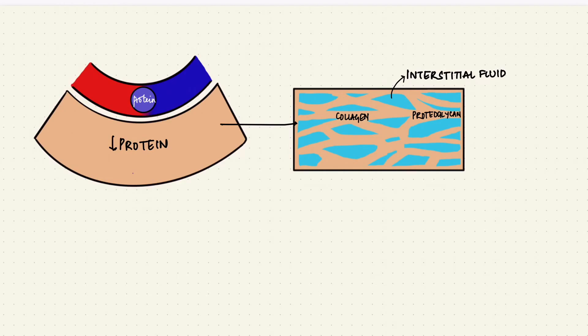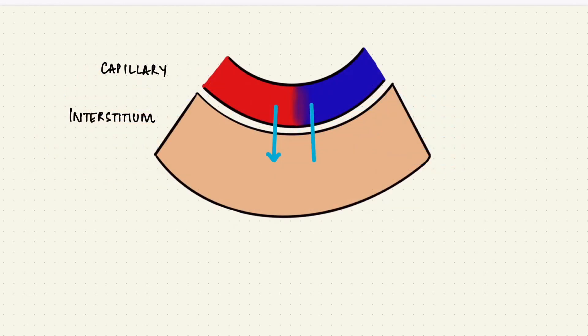Fluid and other solutes move between the capillary and the interstitial fluid, and there are forces that either push the fluid through or oppose it. There are four forces that determine which way fluids can move. These are called Starling forces, named after Ernest Starling.